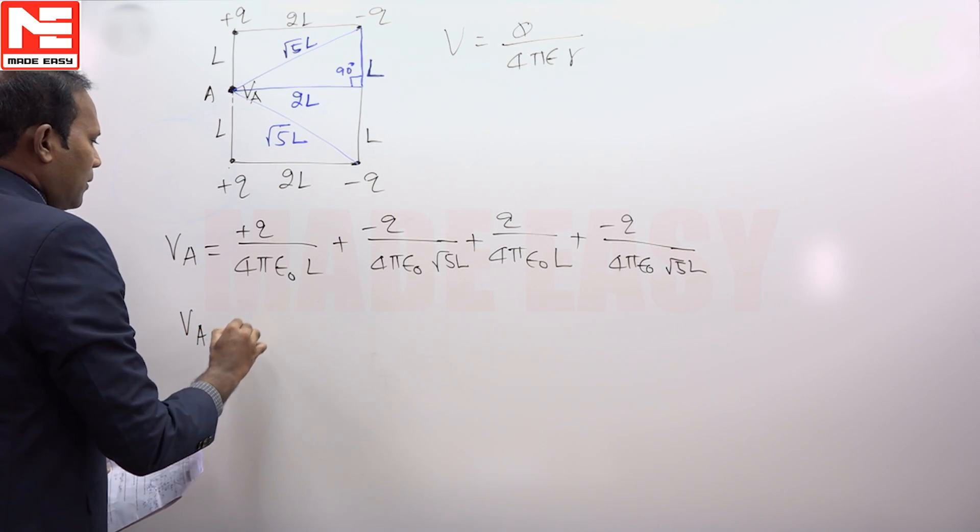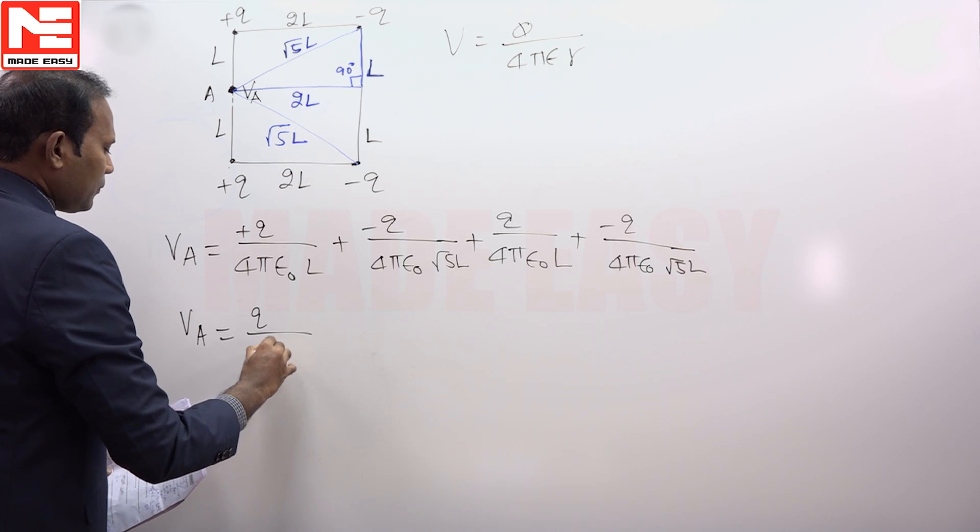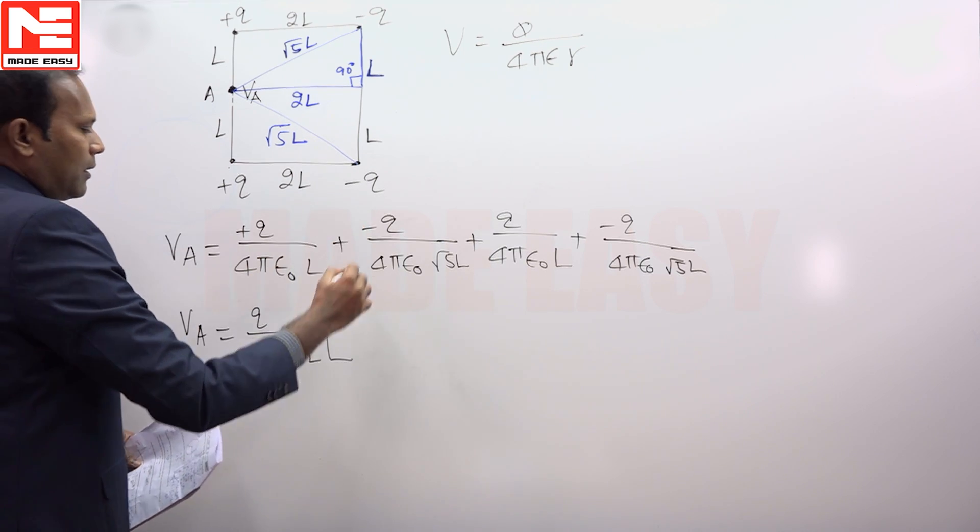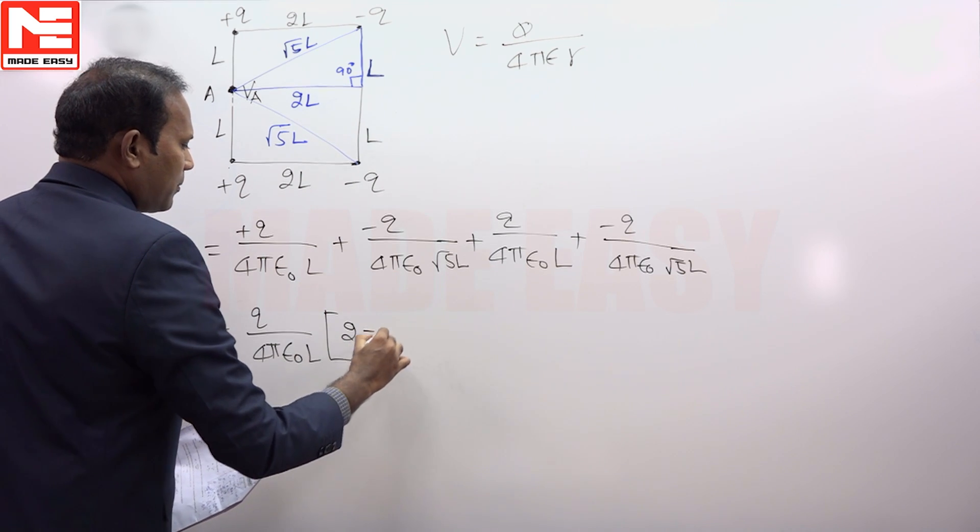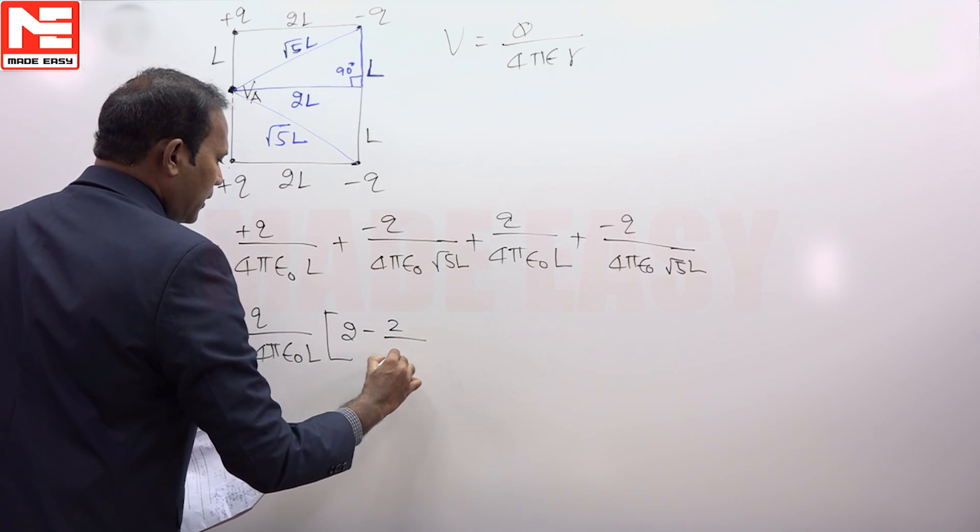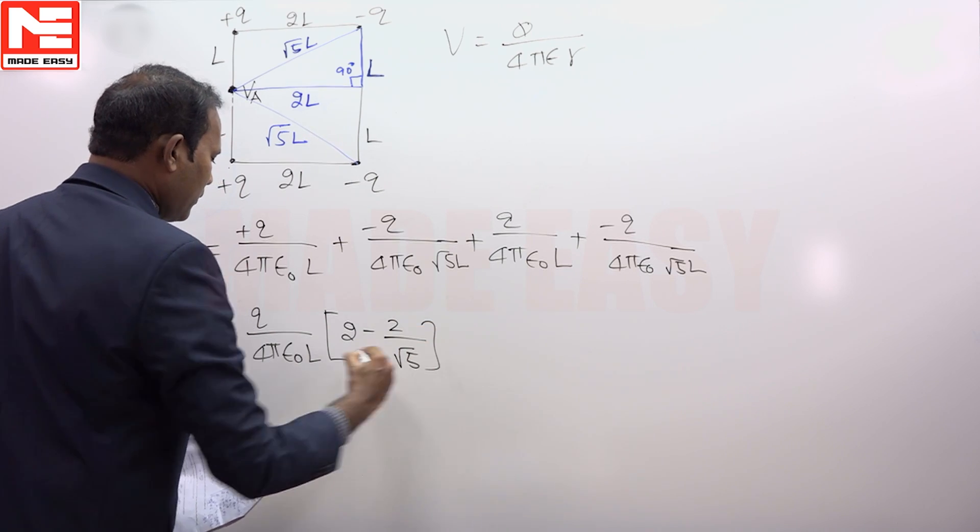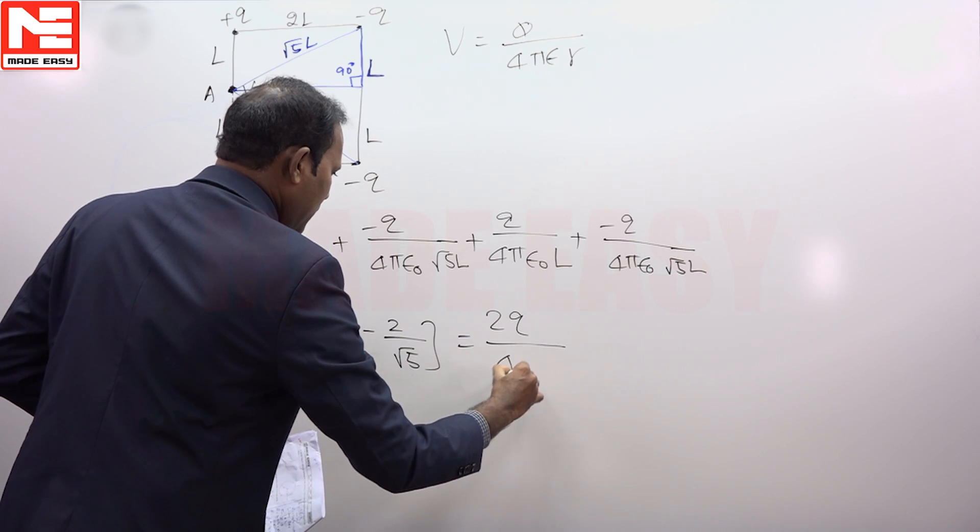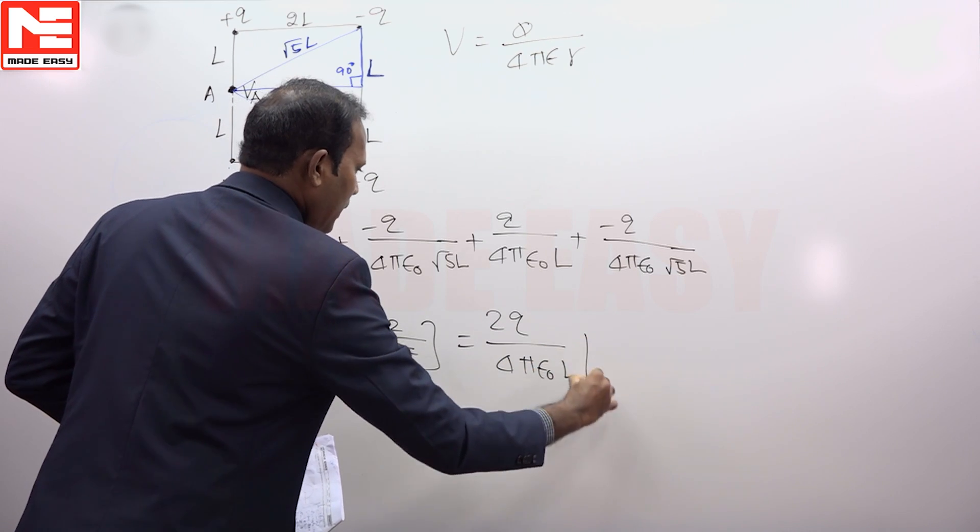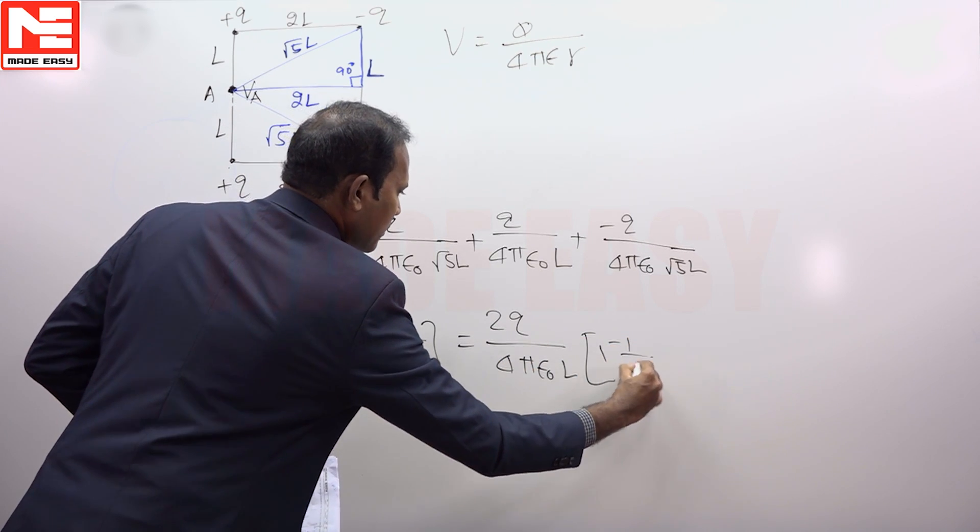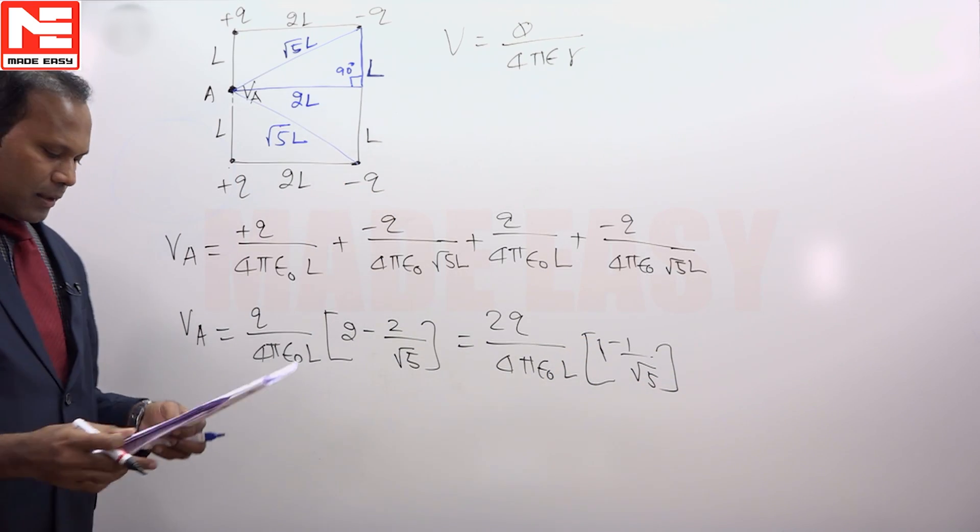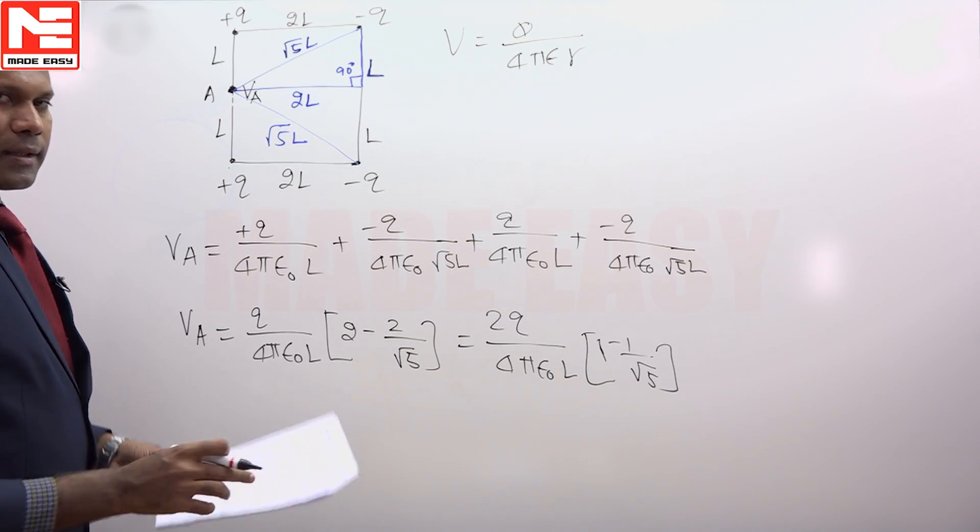So this is equal to 1/4πε₀L, and you get here 2 minus 2 divided by root 5, and you can factor out this 2. So 2Q/4πε₀L times (1 minus 1/root 5). This is your answer. So answer is C.